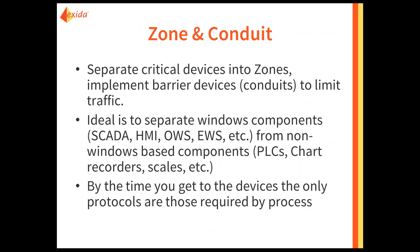As part of the 62443 standards, one of the major steps is to separate the critical devices into zones and implement some sort of a barrier device — generally referred to as a conduit — to limit the traffic that gets to those end devices. The ideal solution is to separate your Windows components like your SCADA systems, HMIs, and embedded CE devices from your non-Windows-based components like PLCs, chart recorders, and scales. The reason is that a Windows device can be compromised by a virus. If infected, it will probably not directly infect the PLCs, but what happens to the network due to that infection can cause unwanted or even catastrophic results.